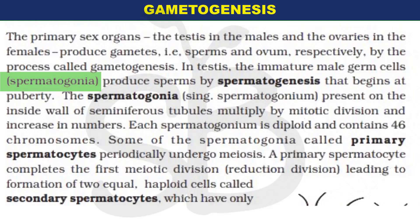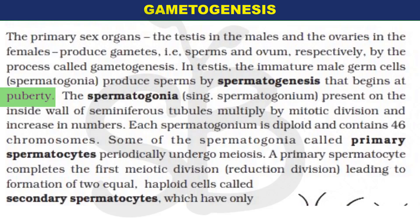Spermatogenesis starts at puberty. Puberty is the period in the human body marking the transformation from a child's body to an adult body. This transformation involves sexual reproduction becoming active. In males, gametogenesis — specifically spermatogenesis — begins during puberty.